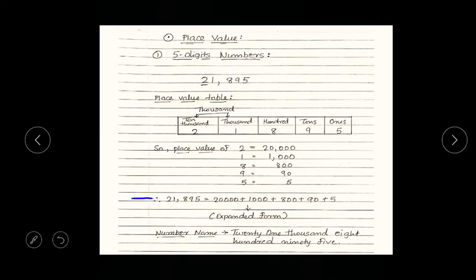Then we have expanded form. Expanded form is nothing but addition of all the place value. That is we have to add all this place value. That will give us expanded form for the given 5 digit number. This we will learn in coming parts.